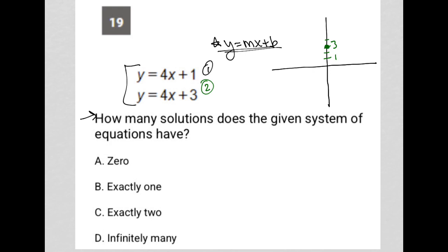I'd go up 4 units—4, 5, 6, and 7—and over 1 unit. So I'd be here, so I'd have a line like that, roughly.